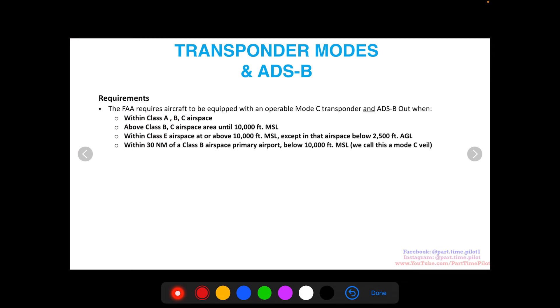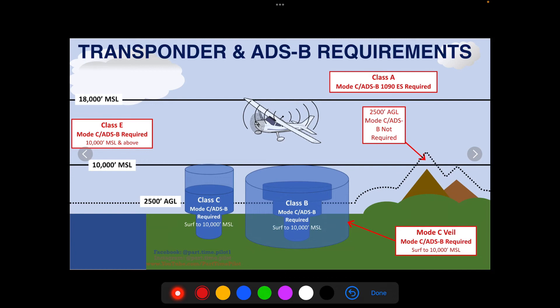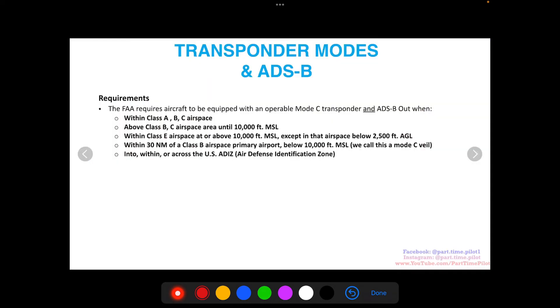Within 30 nautical miles of a Class B airspace primary airport when below 10,000 feet MSL. We call this a mode C veil. So 30 miles is the radius, that's the veil all the way around. If we are within that up to 10,000 feet, then we require mode C and ADS-B.